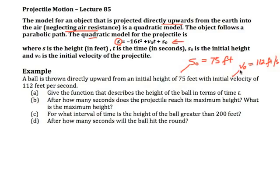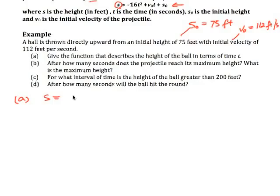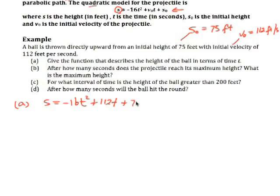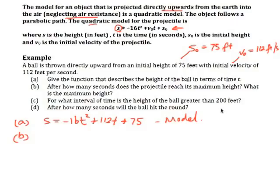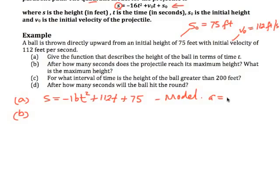In this example, we have a ball thrown directly upward from an initial height of 75 feet. So this tells me that s₀ equals 75 feet, with an initial velocity of 112 feet per second, so v₀ is equal to 112 feet per second. Notice that we have the right units. We want to give the function that describes the height of the ball in terms of time t. So it's going to be s equals negative 16t squared plus 112t plus 75, and that will be our model for this particular object.